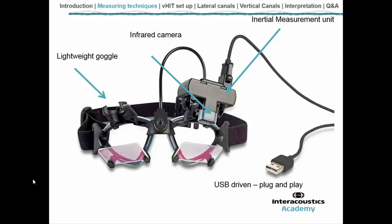The reason the goggle is so lightweight is because any weight can potentially cause slippage, so we keep the goggle super light by minimizing everything apart from the goggle and the strap. We only use one video camera. There is a ball and socket joint on each side of the camera so that we can test both eyes, though it's not necessary to test both eyes at the same time. Inside the goggle, next to the camera, is an inertial measurement unit, which measures the head movement. The camera measures the eye movement, and the inertial measurement unit measures the head movement. That information is sent along a USB wire to the PC.